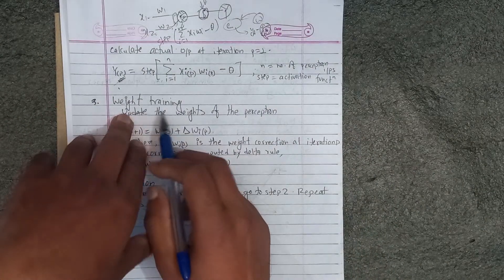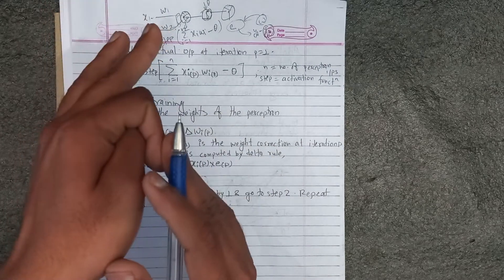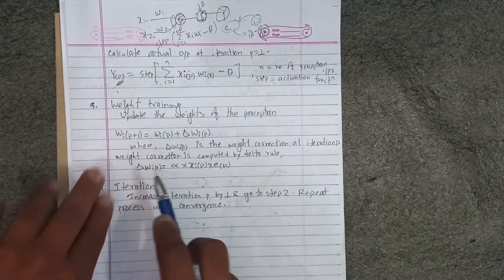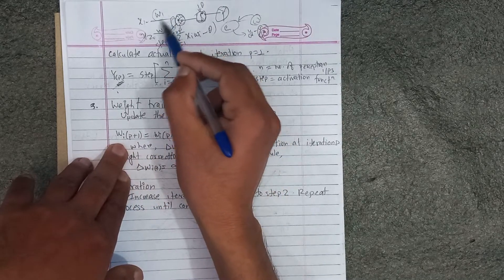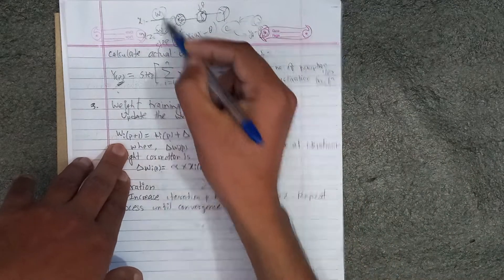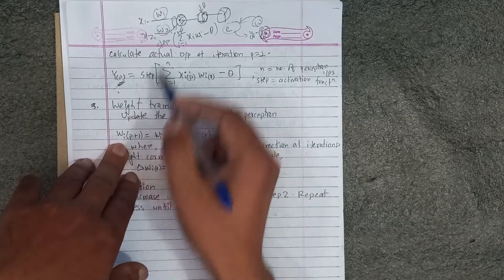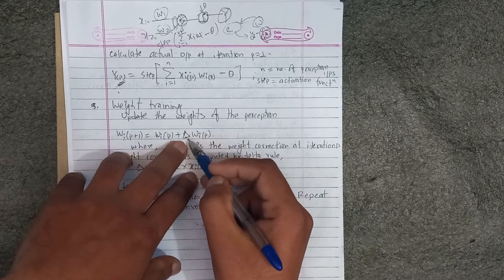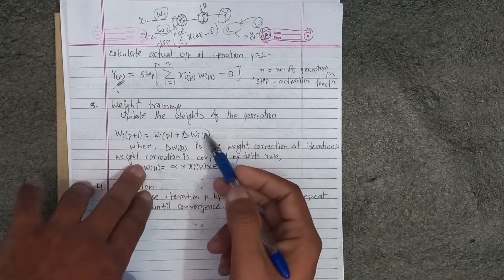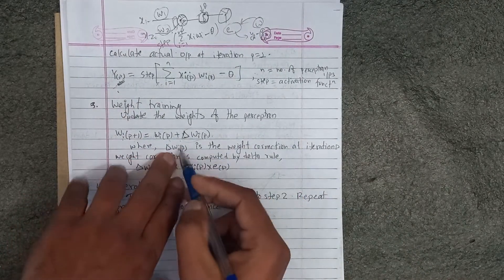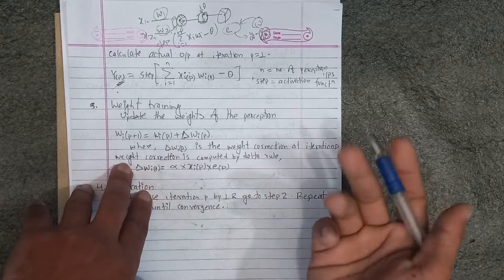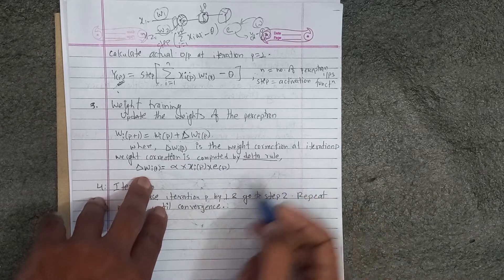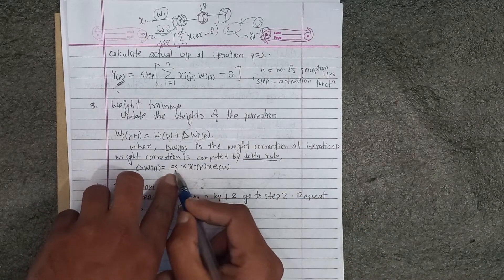The third step is initialization and activation. Now we have one update. The weight correction at iteration p is computed by the delta rule. Delta rule: change in weight = alpha (learning rate) × input ip × error ep.